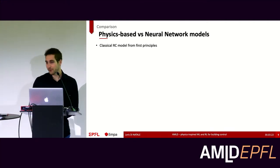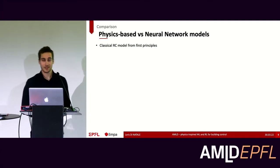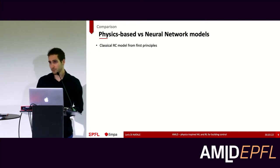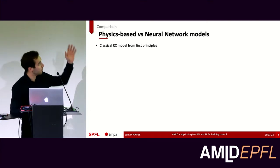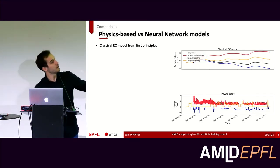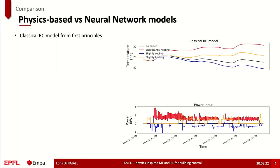The first thing you need when trying a new model is a baseline — you need to compare it to something to make sure you're doing something useful. I took a very classical model called an RC model from physics. This is the kind of result you get: if you heat a lot, the temperature will go very high over three days in your building. On the contrary, if you start to cool, the temperature will slowly drop. That just follows our intuition.